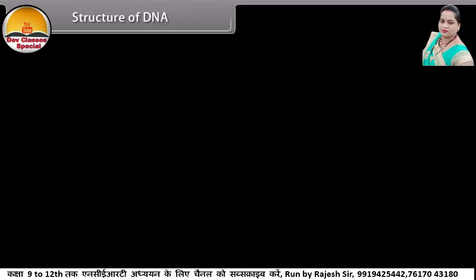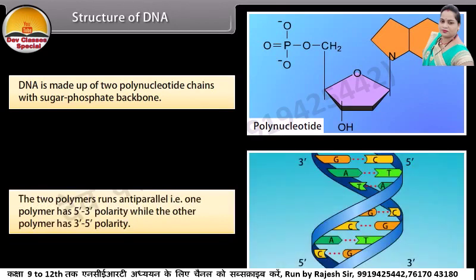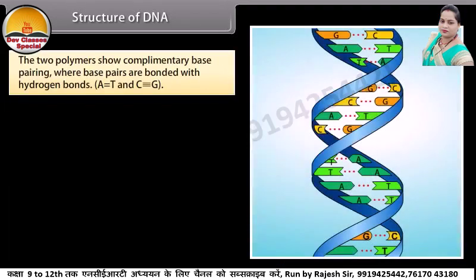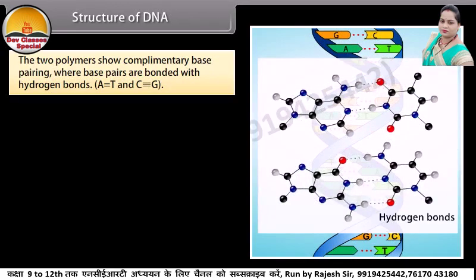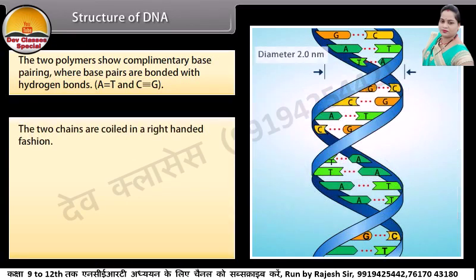Structure of DNA. DNA is made up of two polynucleotide chains with a sugar-phosphate backbone. The two polymers run anti-parallel: one polymer has 5' to 3' polarity while the other polymer has 3' to 5' polarity. The two polymers show complementary base pairing where base pairs are bonded with hydrogen bonds. The two chains are coiled in a right-handed fashion.